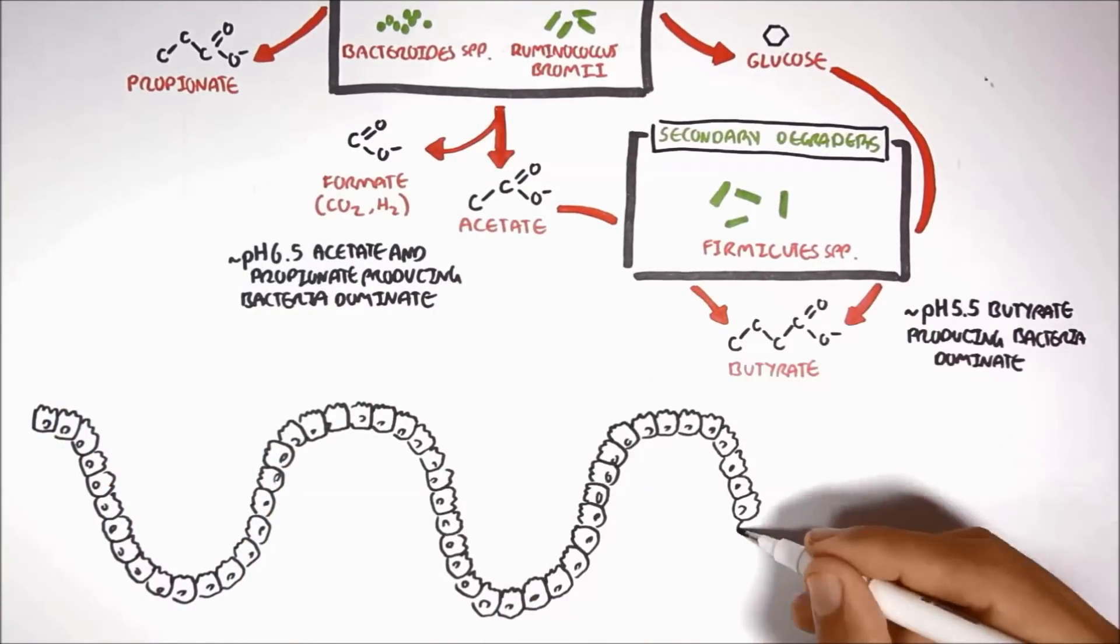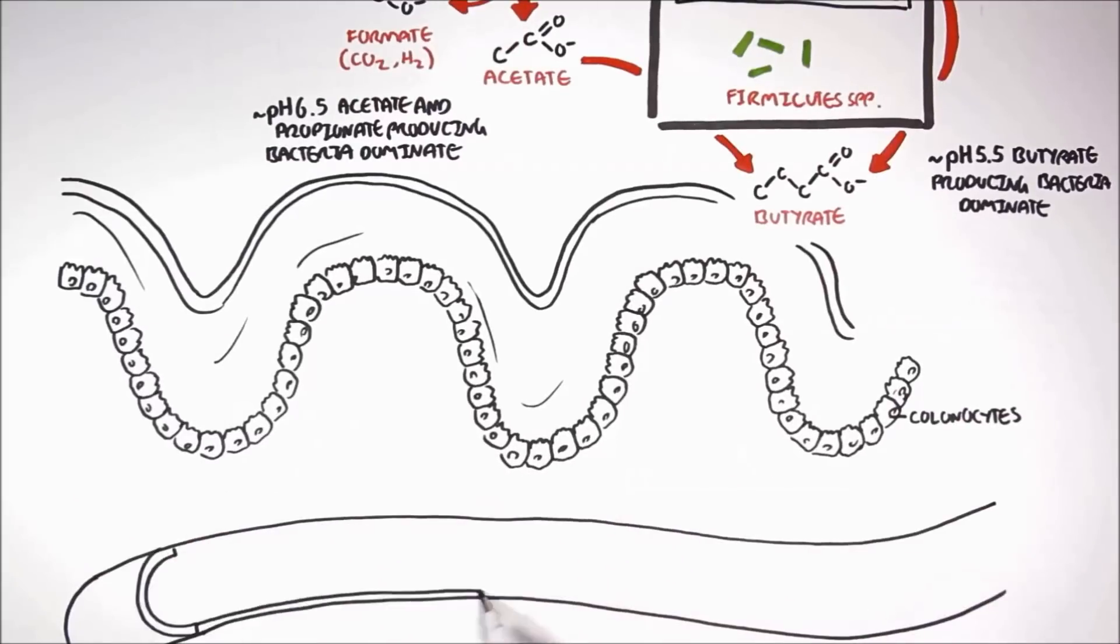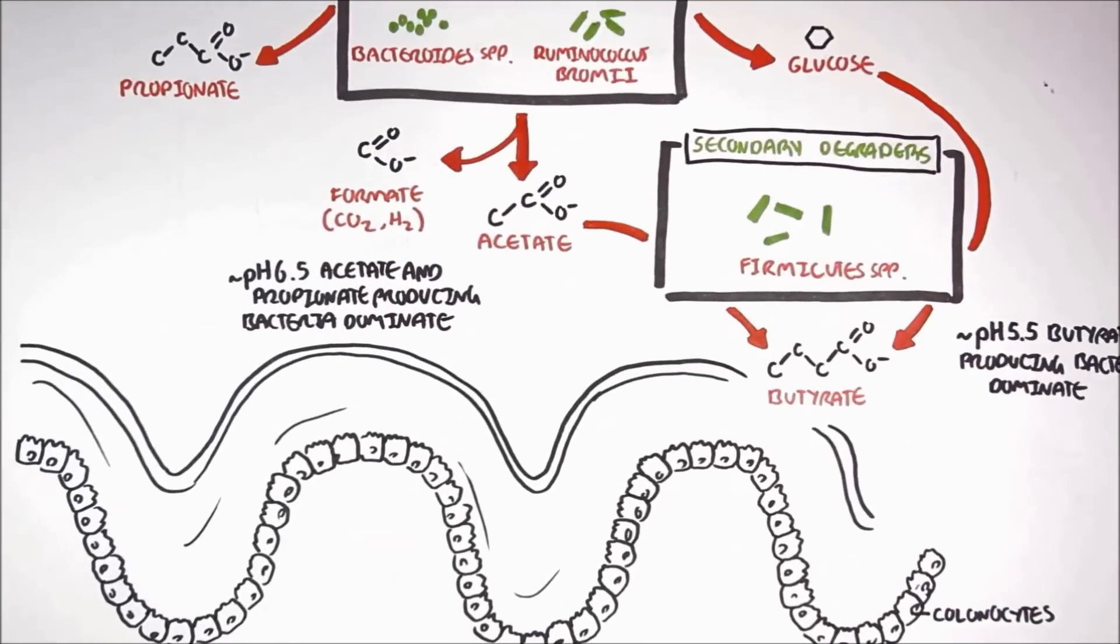From the lumen, these short-chain fatty acids are absorbed by the colon. They're absorbed by the colon epithelial cells, known simply as colonocytes.